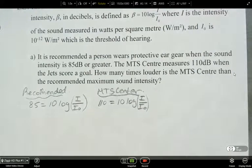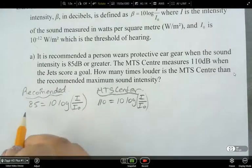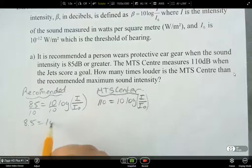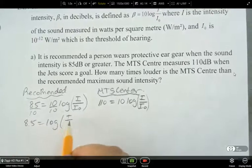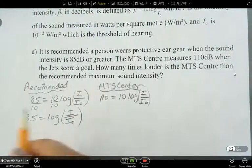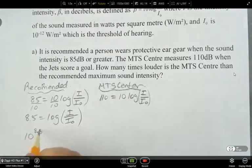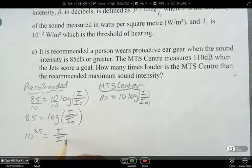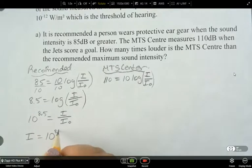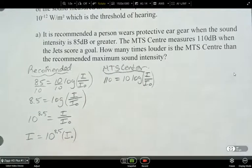Okay, so let's simplify it and then get it into exponential form, so we have it solved for i, and then that's what we're going to be comparing. So divide both sides by 10, and we've got 8.5 equals log i over i-naught. And then this in exponential is 10 to the power of 8.5 equals i over i-naught. And then i is 10 to the power of 8.5 times i-naught.